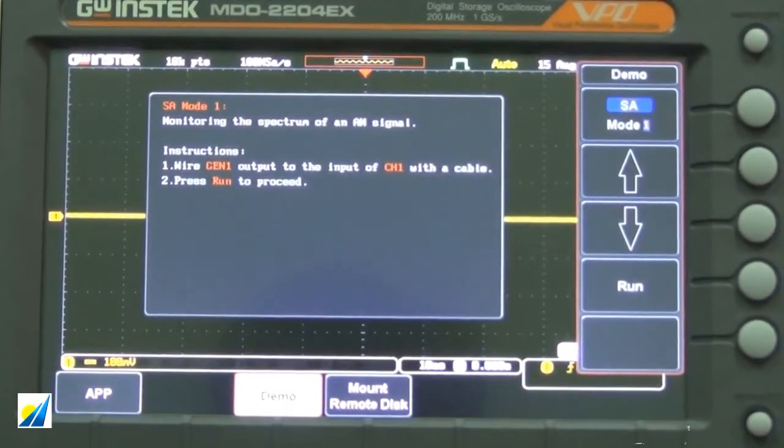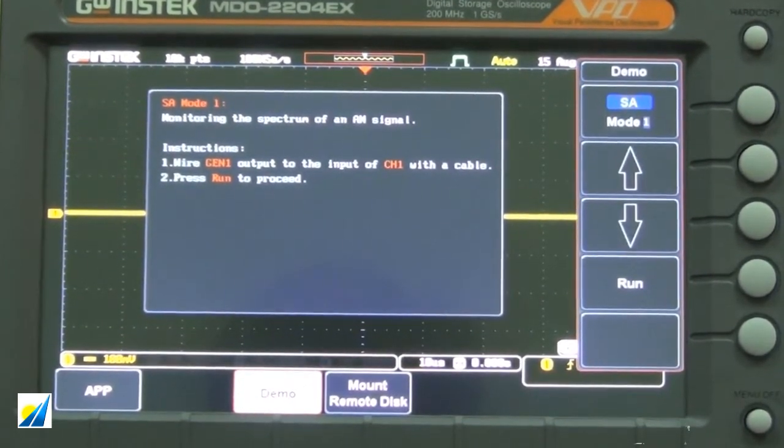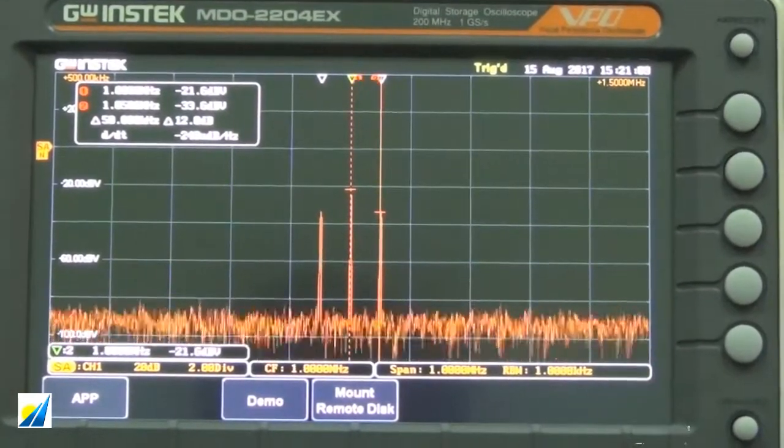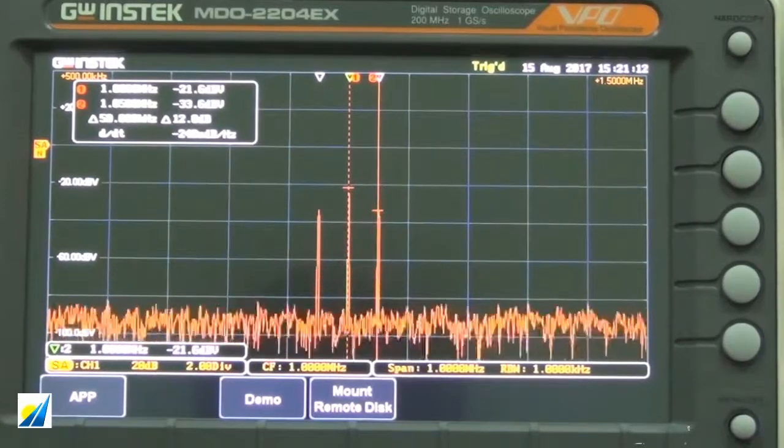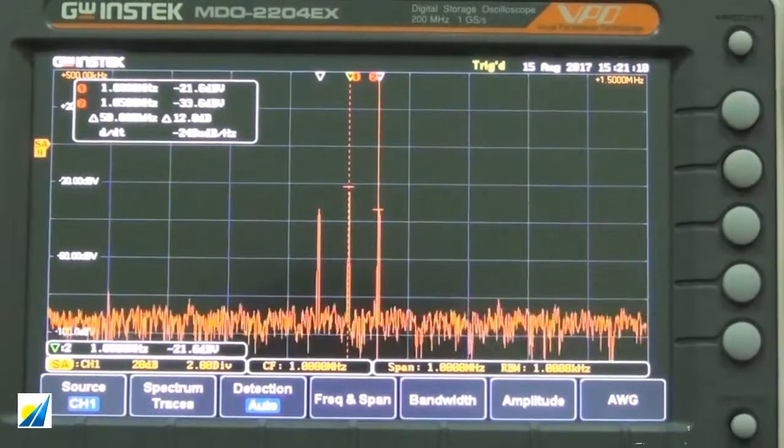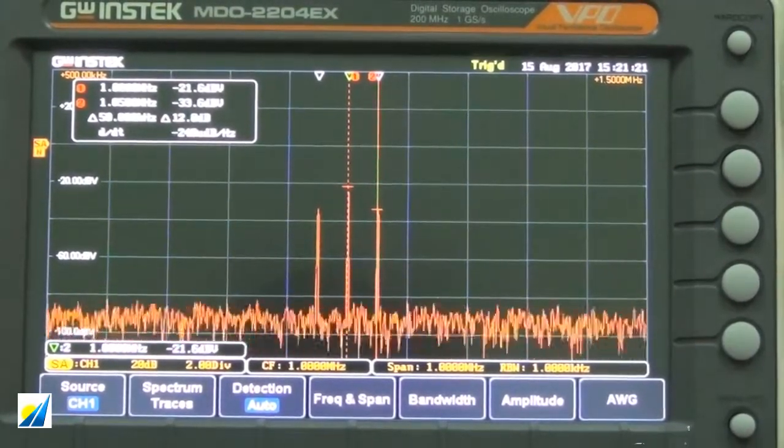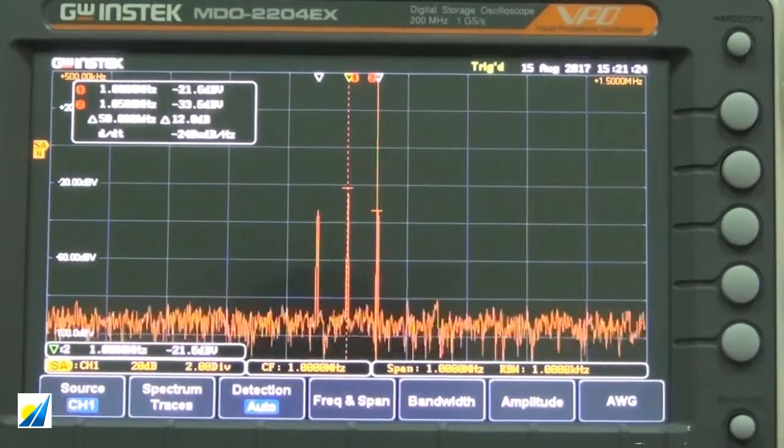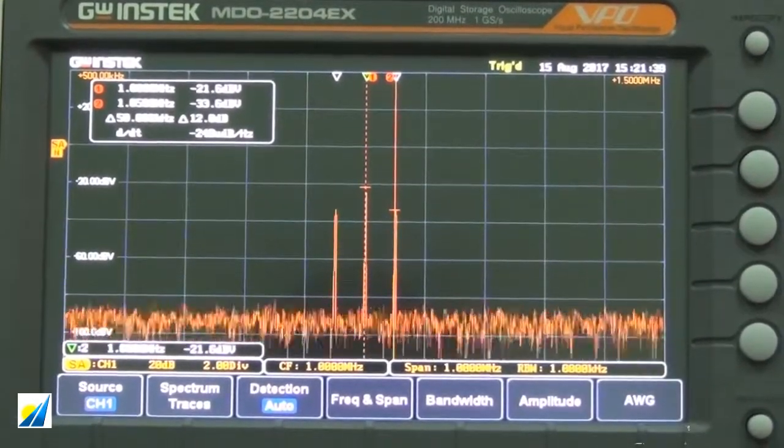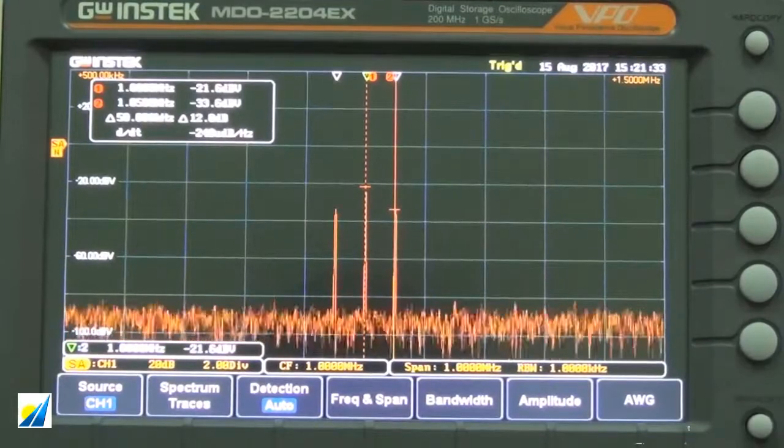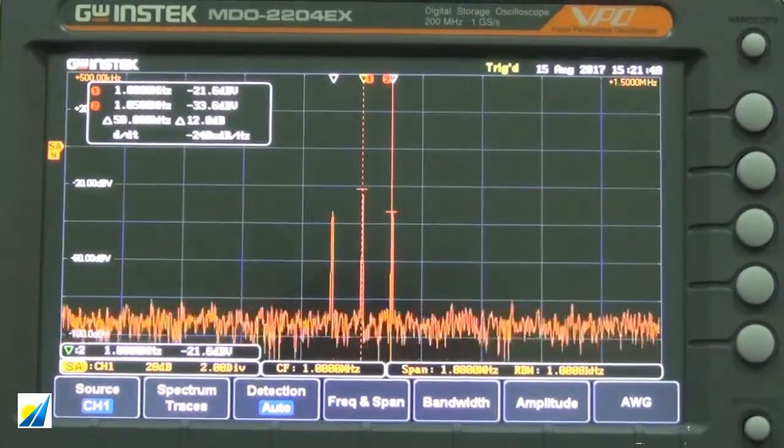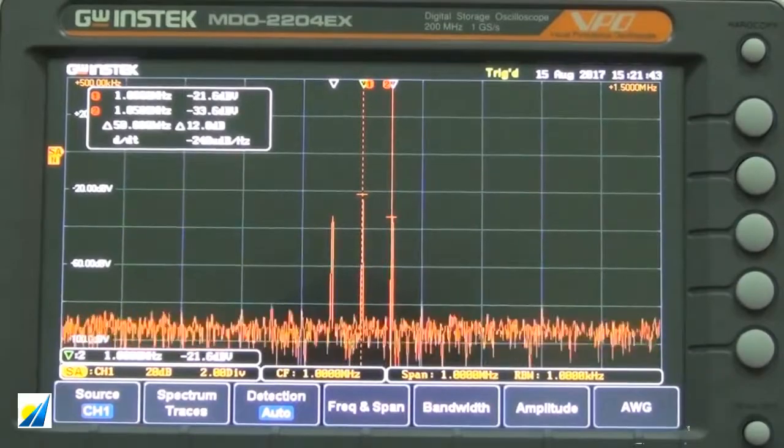First demonstration: Select SA mode 1 and Run. The screen will display AM frequency domain waveforms. Press Option to see Spectrum Settings. This AM signal has a main frequency signal of sine wave, 1MHz, 500mV peak to peak. AM frequency is 50kHz. Demo app has automatically set Start, Stop and Span frequency to correctly display frequency domain waveforms.